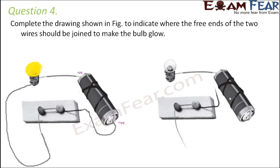Question number four — Complete the drawing shown in the figure to indicate where the free ends of the two wires should be joined to make the bulb glow. Both terminals of the battery should be connected to two different terminals of the bulb. The base terminal of the bulb is connected to one end of the switch, and the other end is connected to the positive terminal of the battery, completing the circuit so the bulb glows.